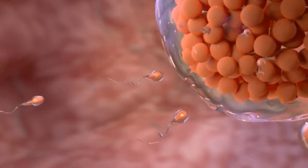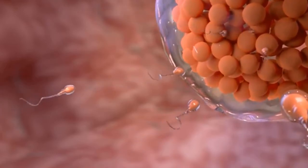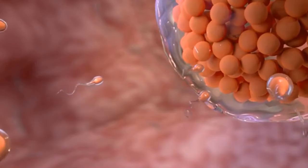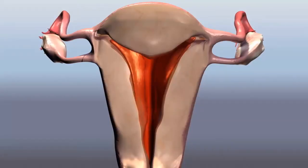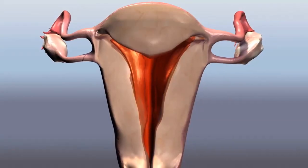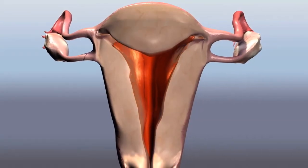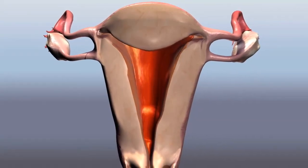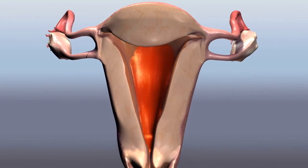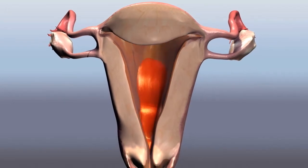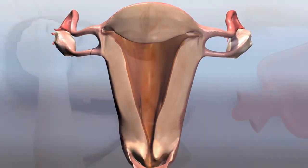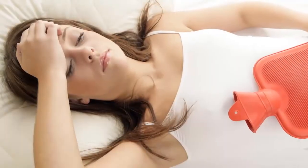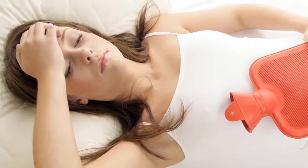The fertilized egg moves through the fallopian tube to the uterus, where it embeds itself in the thickened lining and continues to grow.